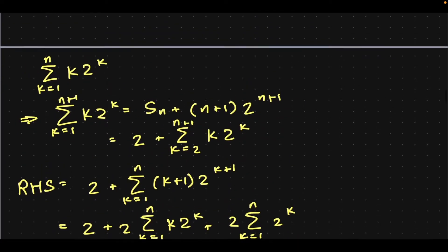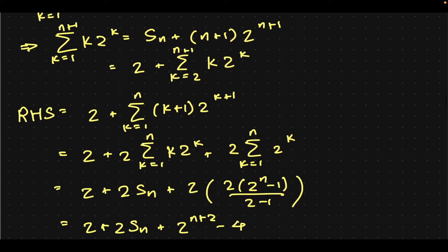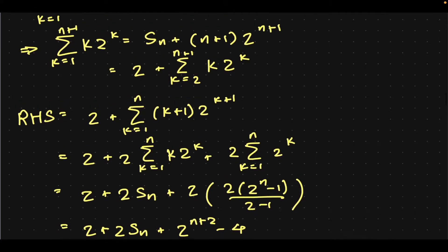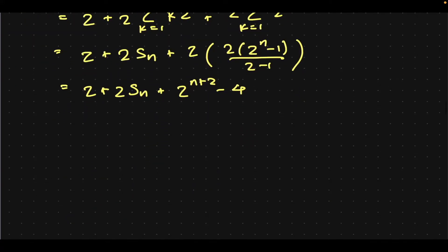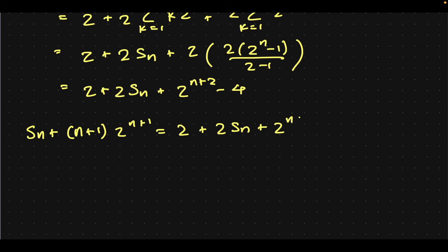The left-hand side is not that hard. It's just Sn and then this pre-factor with that. So, once you write everything out, Sn plus n plus 1 times 2 to the n plus 1 equals 2 plus 2 Sn plus 2 to the n plus 2 minus 4. Now, it's just algebra galore. Sn is 2 plus n plus 1 minus 2 times 2 to the n plus 1.